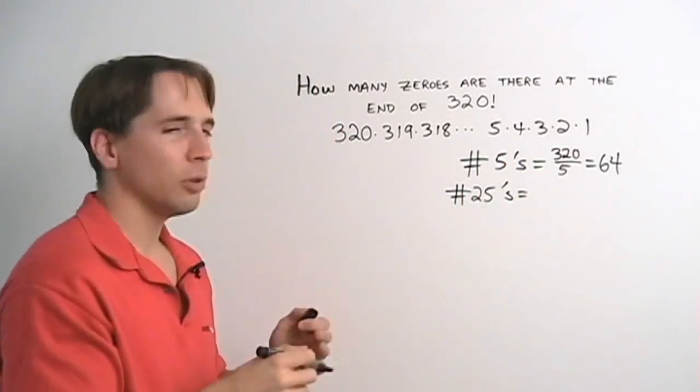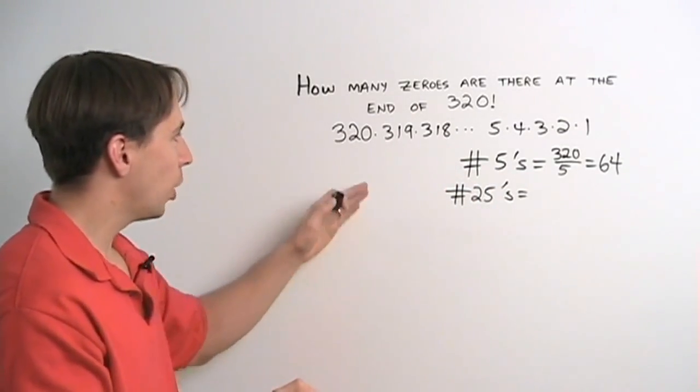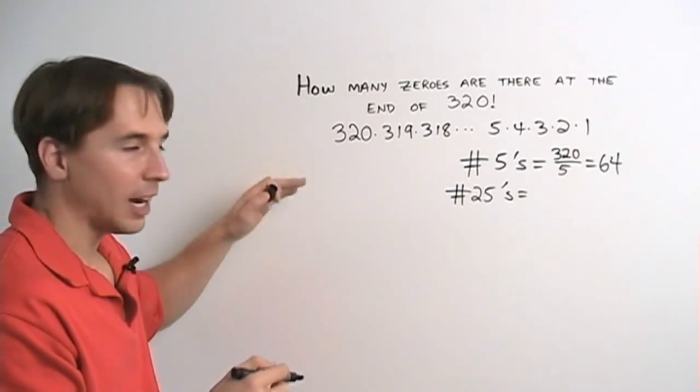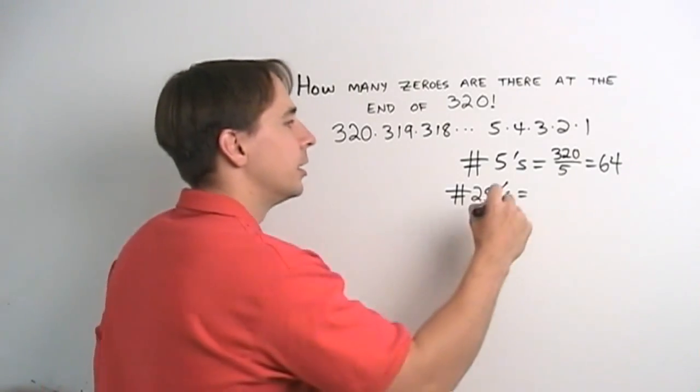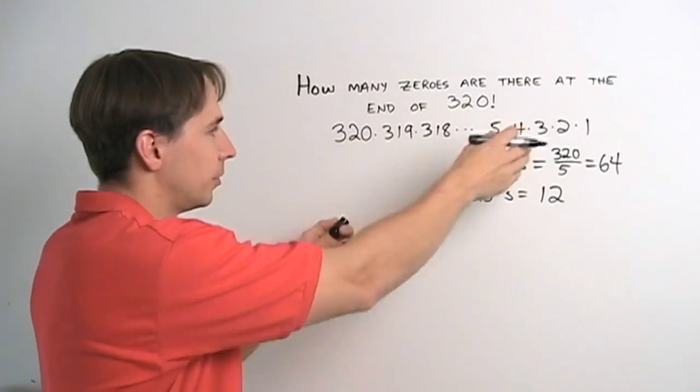Now, how many of them are there? Well, there are just 4 for each 100. 25, 50, 75, 100. We've got three hundreds, that gives us 12. And the next one is 325, not in the list. So there are 12 multiples of 25 in this list.